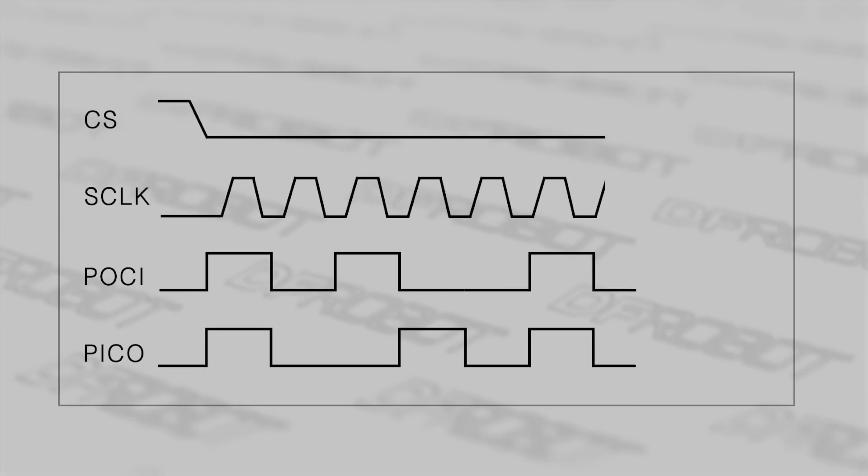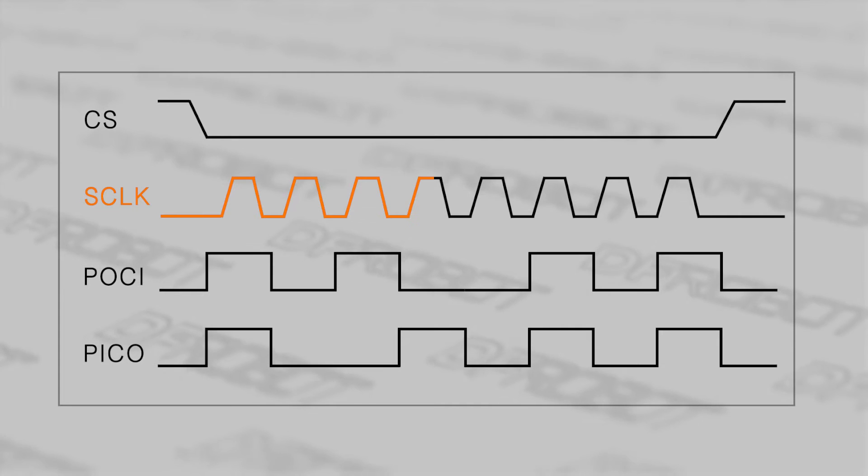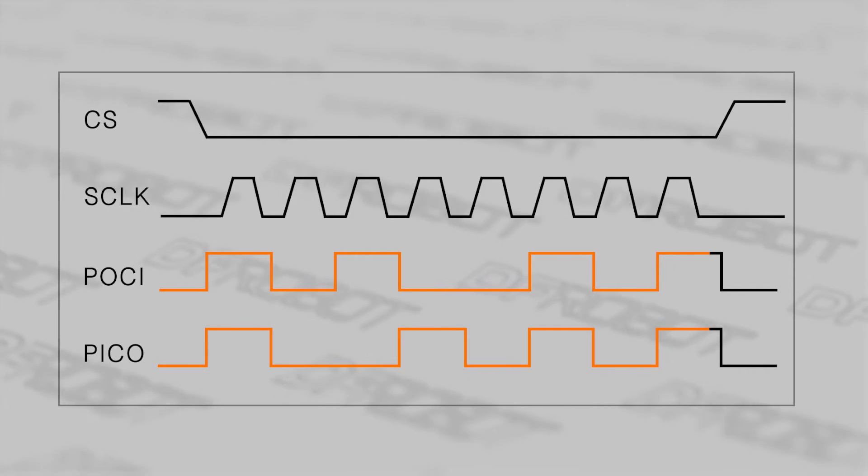After the peripheral is determined, the data transmission starts. As mentioned before, SPI uses a clock line to synchronize the transferred data bits. When the transmission mode is selected, signals can be transferred via PICO and POCI at the same time on the rising or falling clock edge, just like two trains running toward each other.